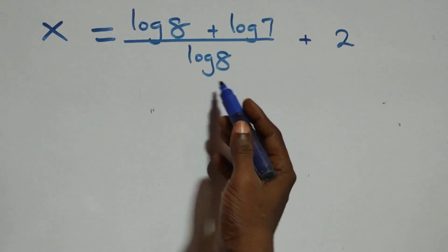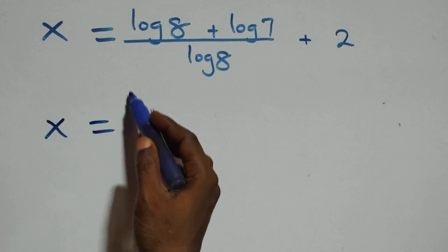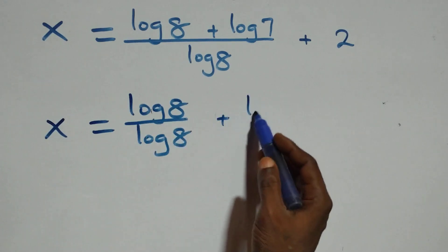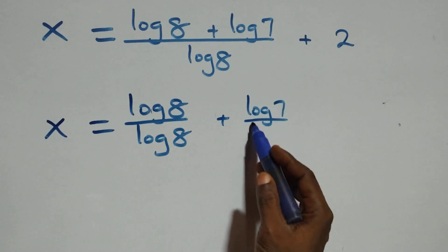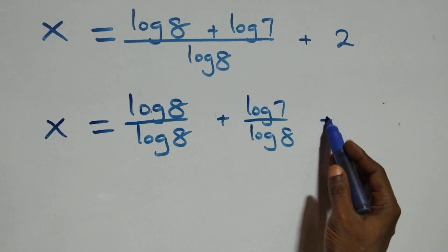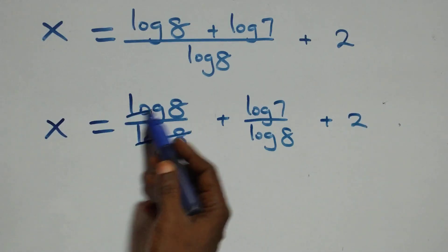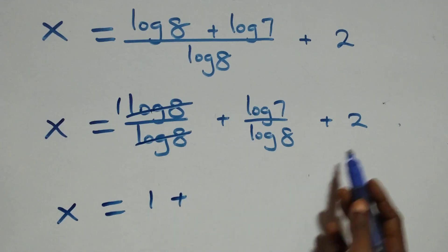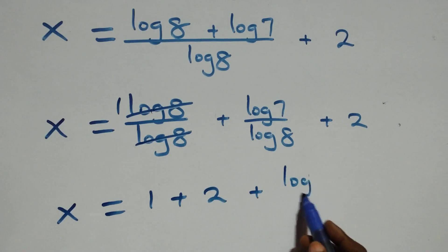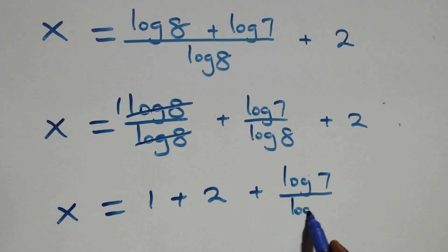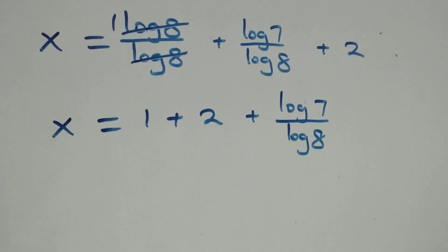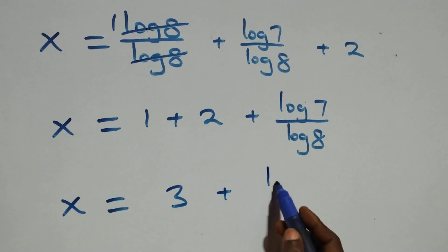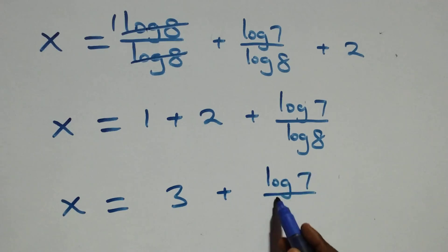Next step, we separate this into two fractions: x equals log 8 over log 8 plus log 7 over log 8 plus 2. Log 8 over log 8 cancels to give 1. So x equals 1 plus log 7 over log 8 plus 2, which gives x equals 3 plus log 7 over log 8.